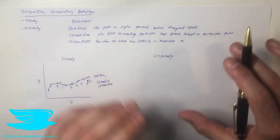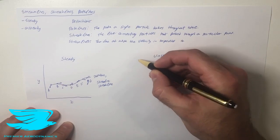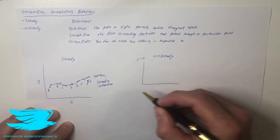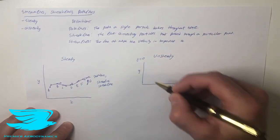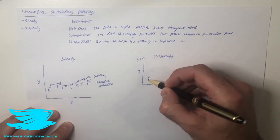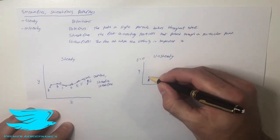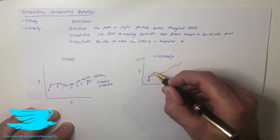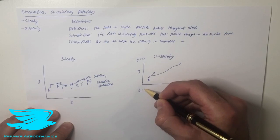The unsteady case is where everything changes, and this is where these definitions are very important. Let's talk about one instant at a time. At T equals zero, we have a Cartesian coordinate plot with x and y components. We have point A, and if we were to draw the streamline — the line at which the velocity is tangential throughout — we might get something like this. That means at this point in time, particle A is going to be forced in this direction.